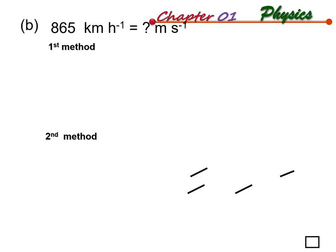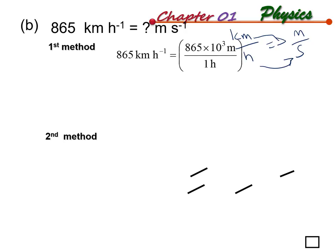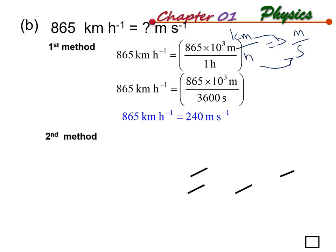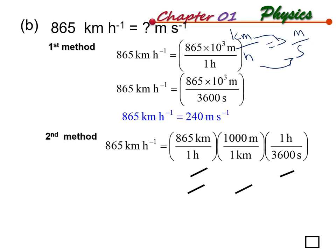For question B, there are two methods - you can follow whichever you prefer. This question involves converting kilometers per hour into meters per second. For Method 1: convert kilometer to meter by multiplying by 1000, then convert hour to seconds where 1 hour equals 3600 seconds. This gives 240 meters per second.